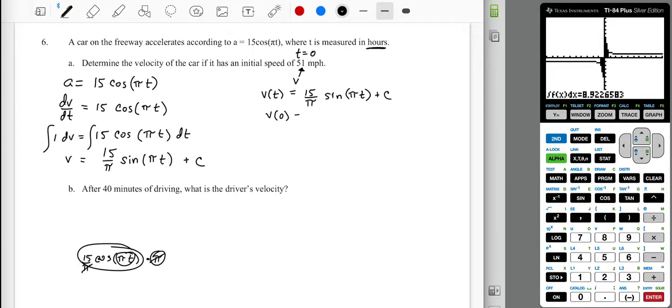So v of 0 is 15 over pi, sine of pi times 0, plus c. Sine of 0, pi times 0, 0, sine of 0 is 0. So v of 0 ought to be 51, so 0 plus c is going to give us c is equal to 51, which means v of t is going to be 15 over pi times the sine of pi t, plus 51. Variable acceleration implies variable velocity, so we're in good shape here.